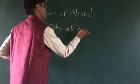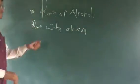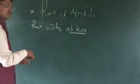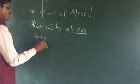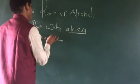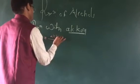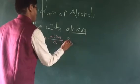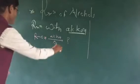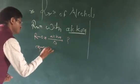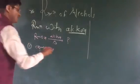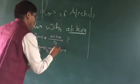The reaction with alcoholic KOH (potassium hydroxide): the starting reactant molecule is ROH. This ROH is reacting with alcoholic KOH. If the reactant is C2H5OH, that is ethyl alcohol, it is reacting with alcoholic KOH.